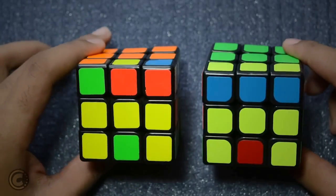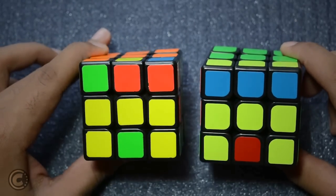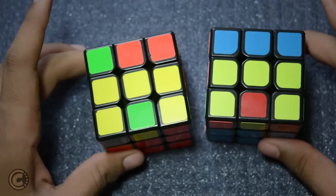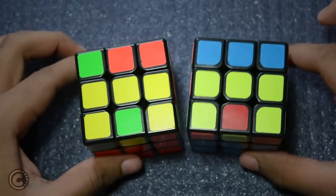Hey guys, it's me CriticalCubing and in this video we are going to learn about the C-OLL cases. Now there are only 2 C-OLL cases and they are very easy to recognize. So how do you recognize the C-OLL cases?